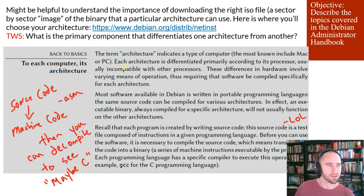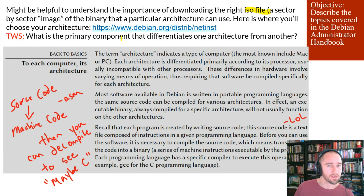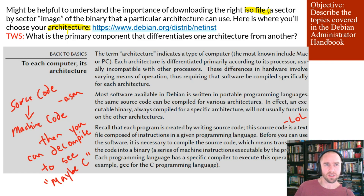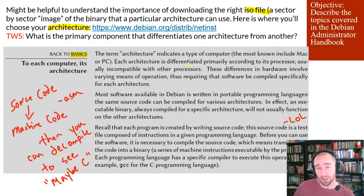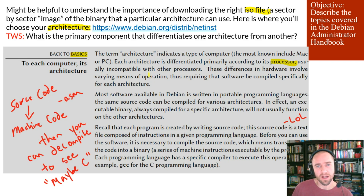Before I end the video, I should probably just talk a little bit about downloading the ISO file so that you can get your hands dirty with Debian. Here is where you would go to download a copy, though there are many resources out there. If you remember, we were just talking about architectures and how different processors use different architectures — you want to make sure you know what your processor's architecture is so you can choose the right ISO file to download. The handbook notes that each architecture is differentiated primarily according to its processor.